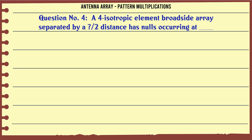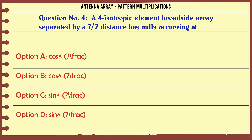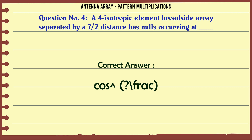A 4-isotropic element broadside array separated by a λ/2 distance has nulls occurring at: A. cos⁻¹(n/2), B. cos⁻¹(n/4), C. sin⁻¹(n/2), D. sin⁻¹(n/4). The correct answer is cos⁻¹(n/2).